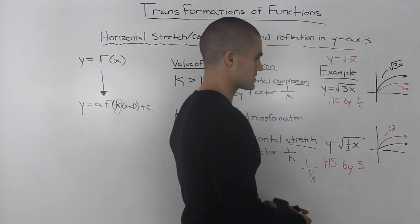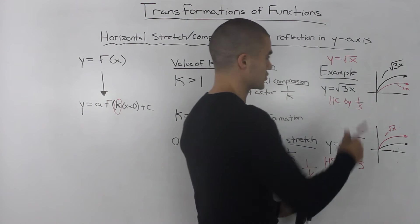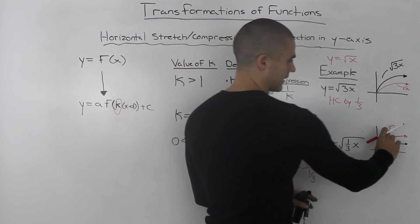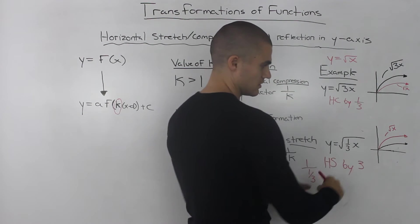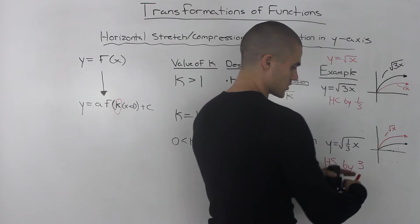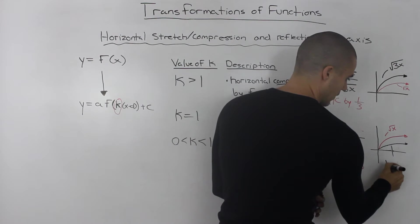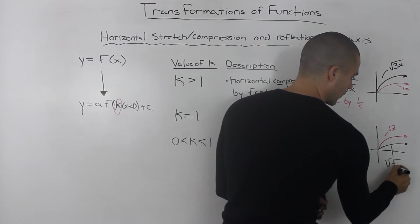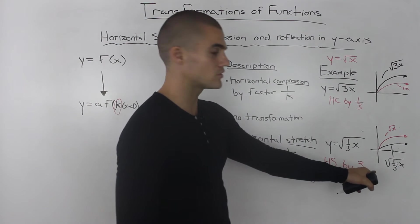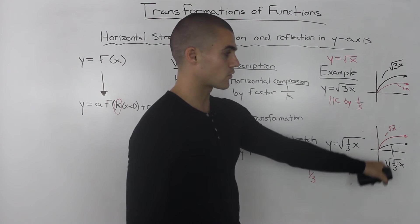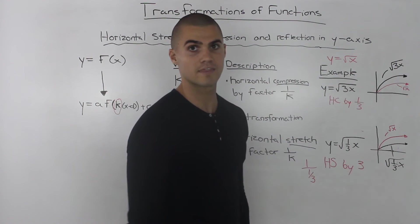Showing this graphically, the red function is our base parent function, the square root of x. If we take that and horizontally stretch it, we get the resulting function, which is the square root of (1/3)x. Again, if you took a table of values and plotted both on the same graph, you would get that result.